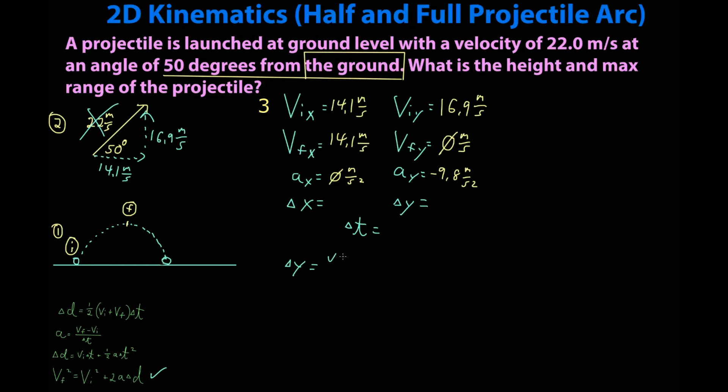Delta y equals VFY squared minus VIY squared over 2AY equals 0 squared minus 16.9 meters per second squared over 2 times negative 9.8 meters per second squared.